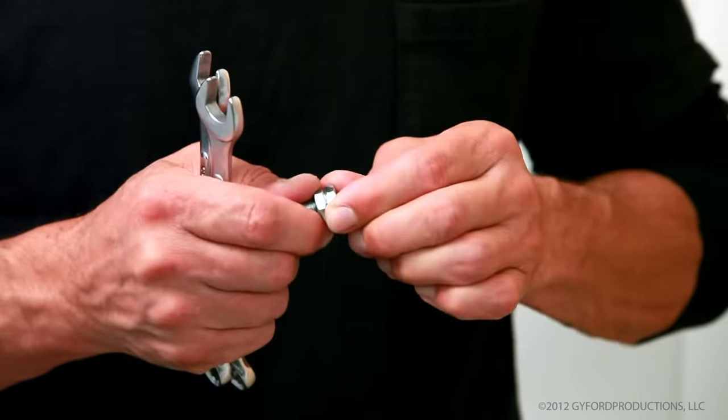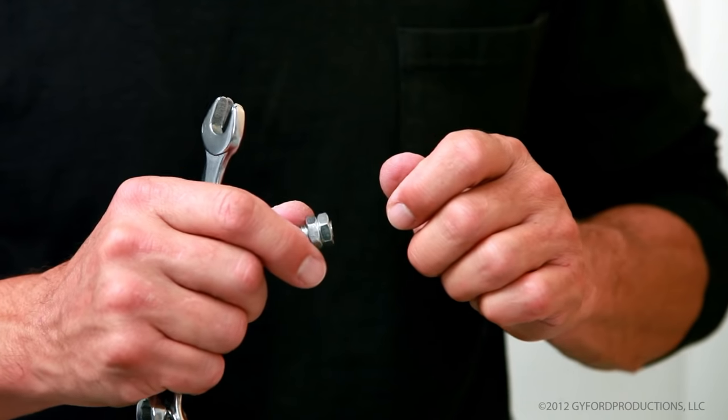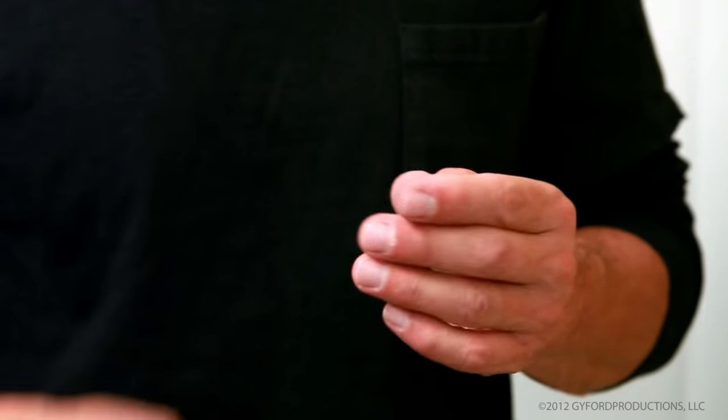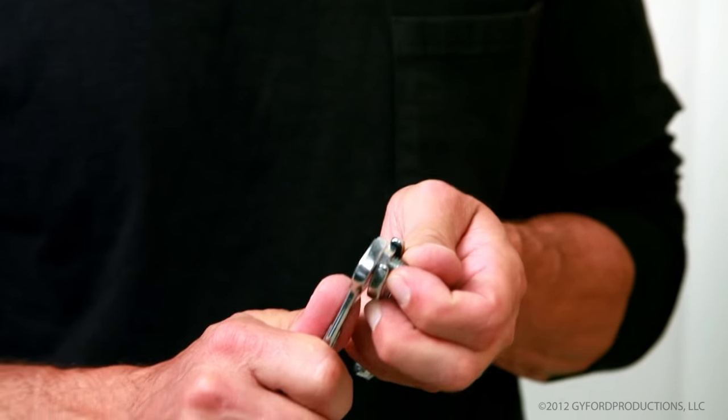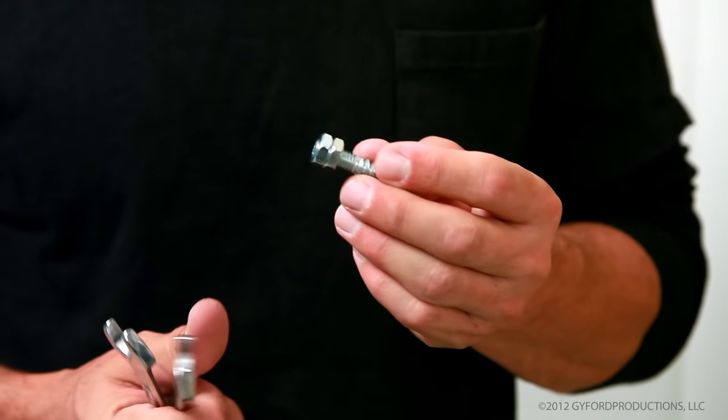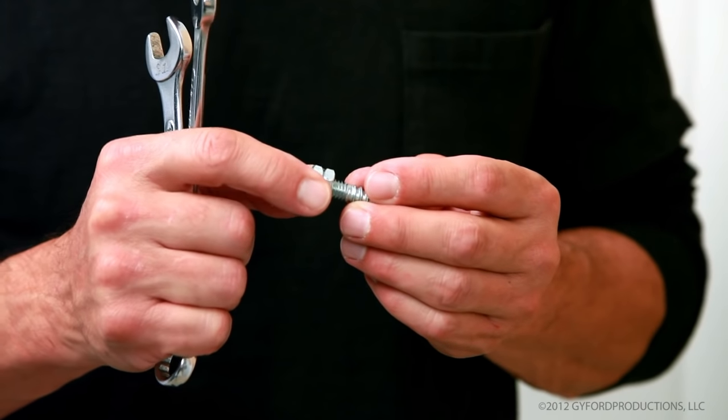Use your fingers to jam them together by turning one one way, one the other, and then do the same with your open-end wrenches. This will seize them together and create a head for you to turn.